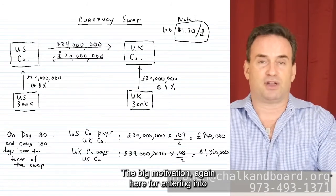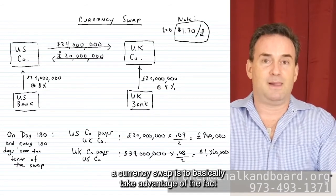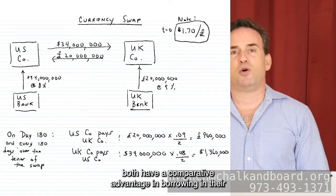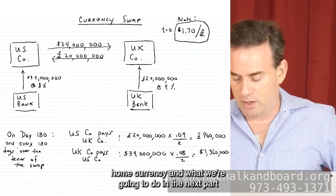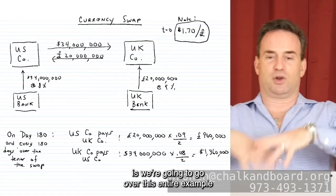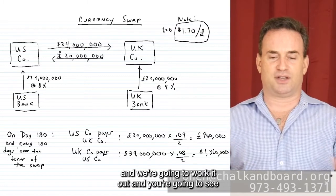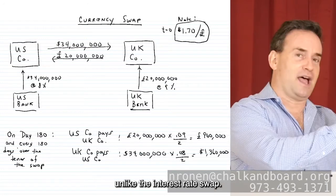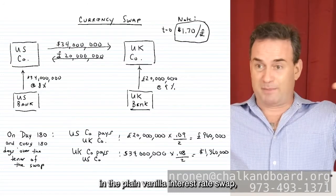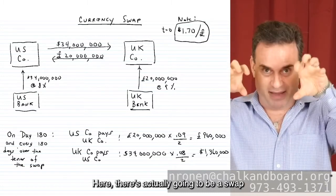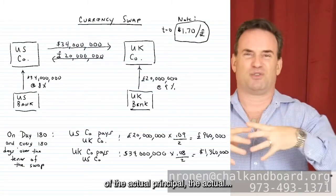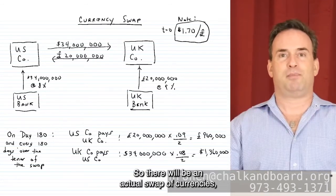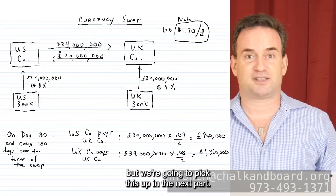That is why many people with large principal values don't want to go into the foreign exchange markets — it exposes all of that principal to foreign exchange rate risk. The big motivation for entering into a currency swap is to take advantage of the fact that each company — the US company and the UK company — has a comparative advantage in borrowing in their home currency. In the next part we'll work out this entire example. Note that unlike the plain vanilla interest rate swap — where there is no swap of principal — in a currency swap there will be an actual swap of the principals since each is in a different currency.